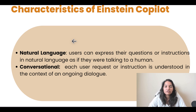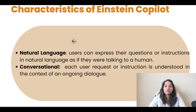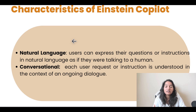The first important thing we're going to talk about is what are the characteristics of Einstein Copilot. There are two main characteristics. One is it understands natural language. Basically it understands the human language — it's like talking to a friend. Users can express their questions or instructions in natural language as if they were talking to a human. That is how Einstein Copilot works.